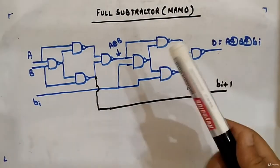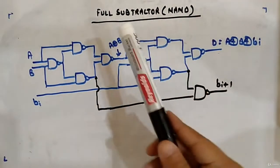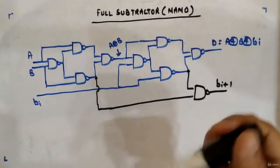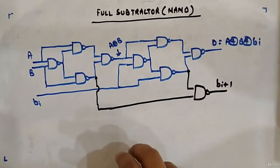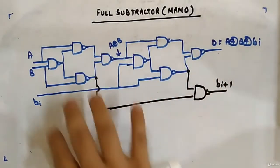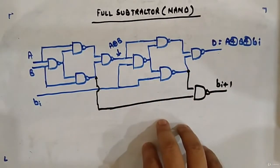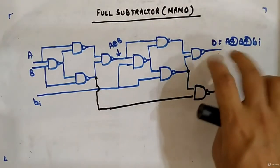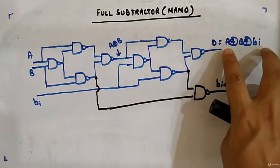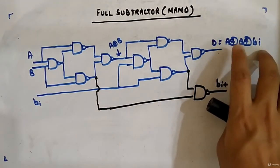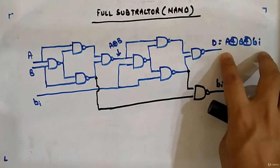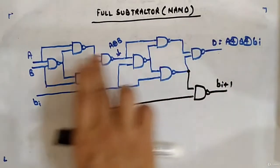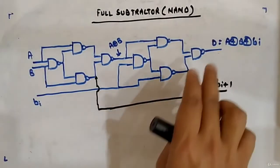Let's look at the designing of a full subtractor using NAND gate, which is our first universal gate. This is the arrangement given to you. In the difference output, we have A XOR B XOR BI, which is similar to what we had in full adder — A XOR B XOR carry input. So the structure will be the same for difference as well.